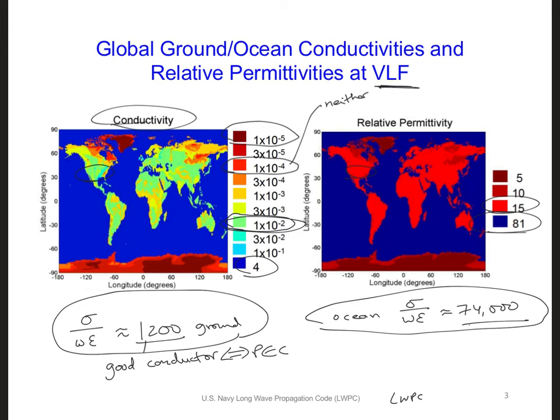Specifically, let's start by looking at 1×10⁻² Siemens per meter — that's the conductivity for ground. And separately, we will also consider propagation over the ocean, where sigma is 4 or 3.33. So here's a question: how can we account for the finite conductivity and permittivity of the good conductor ground or ocean in our model?